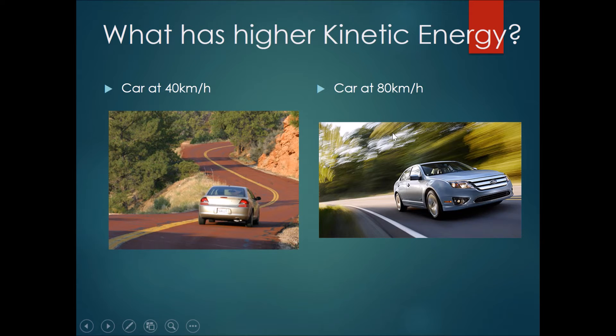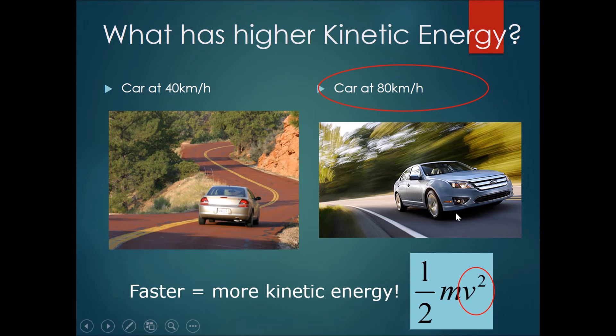Which one has higher kinetic energy: the car moving at 40 km per hour or the car moving at 80 km per hour? It should be quite clear. The car at 80 km per hour should have the higher kinetic energy, assuming both cars have the same mass. The one with higher speed would have higher kinetic energy.